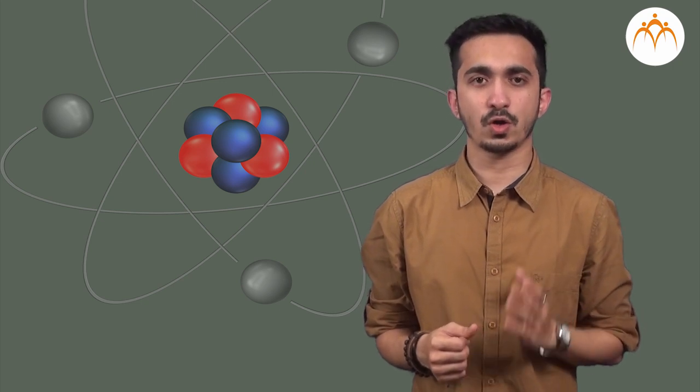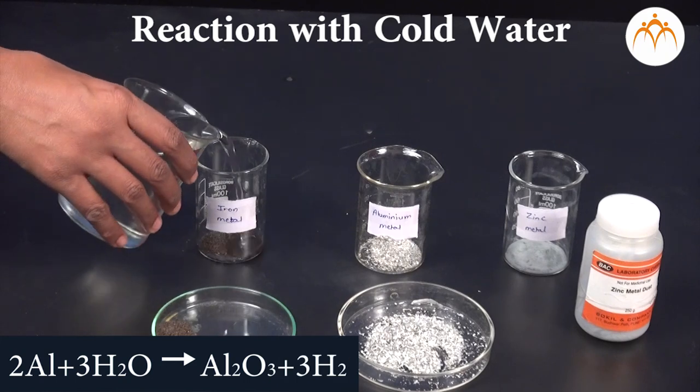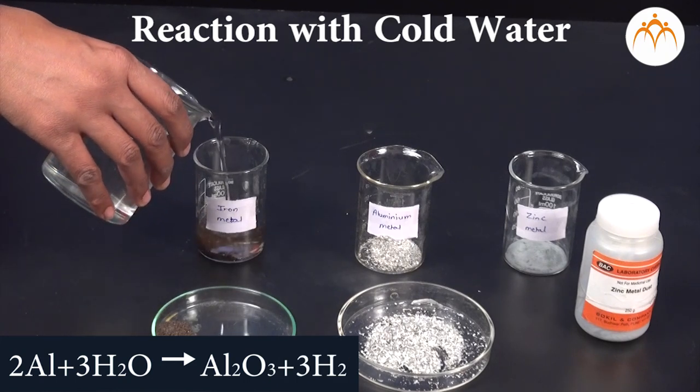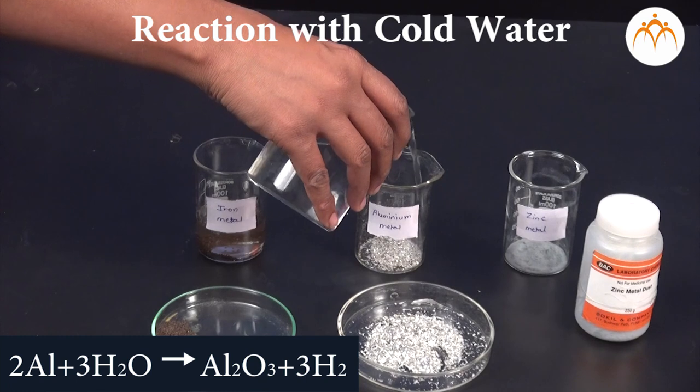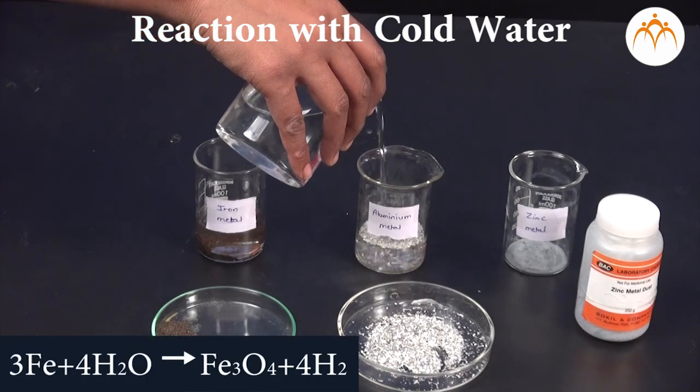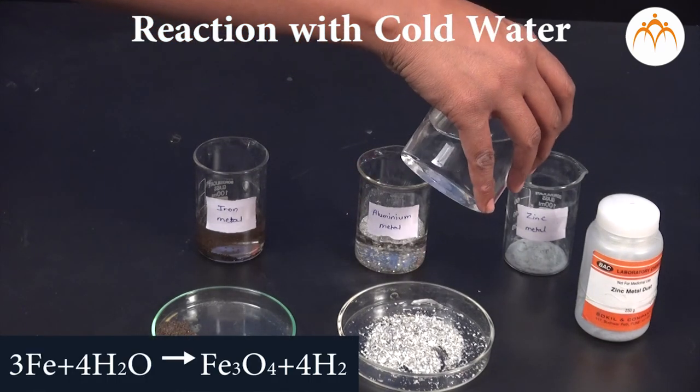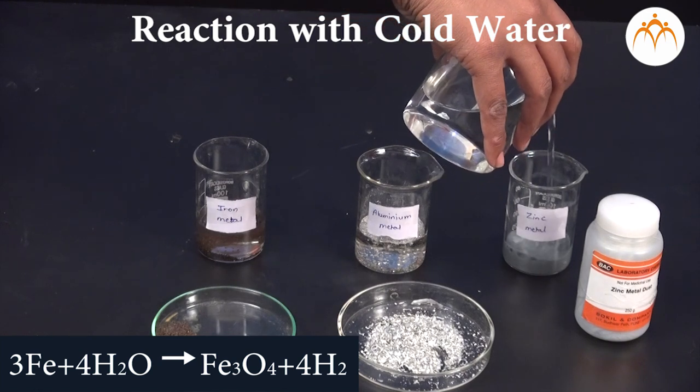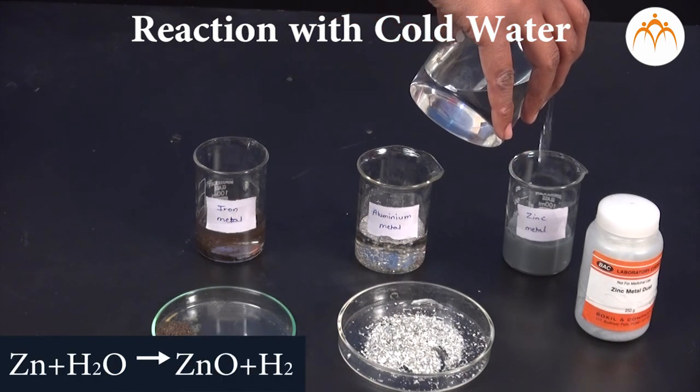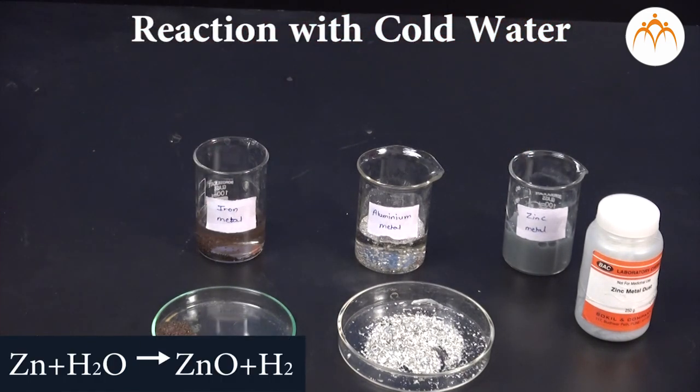The metals aluminium, iron and zinc do not react with cold or hot water, but they react with steam to form their oxides. Hydrogen gas is released in this reaction. 2Al plus 3H2O gives Al2O3 plus 3H2. 3Fe plus 4H2O gives Fe3O4 plus 4H2. Zn plus H2O gives ZnO plus H2.